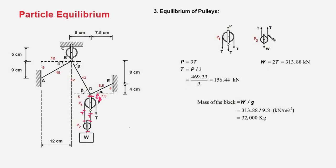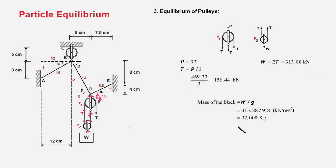Writing equilibrium for pulley P1: P = 3T, therefore T = P/3 = 469.33/3 = 156.44 kilonewtons. From pulley P2: W = 2T, therefore W = 313.88 kilonewtons. To find the mass, we divide the weight by g: mass = 313.88 kN / 9.8 m/s² = 32,000 kilograms. That is our answer — the mass of the block is 32,000 kilograms.